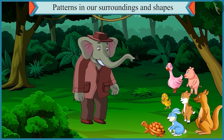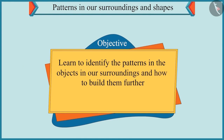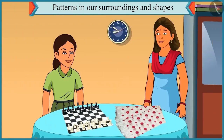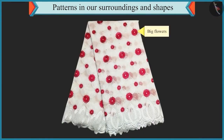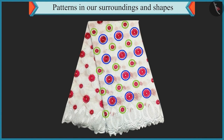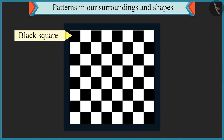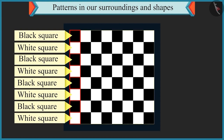So friends, today we will learn to identify the patterns in the objects in our surroundings and how to build them further. Look, Chutki. Here a pattern is created in my saree using big and small flowers. Yes, the big and small flowers are repeated in your saree. Now look at this. A pattern of one black square and then one white square followed by a black square is repeated in a chessboard.